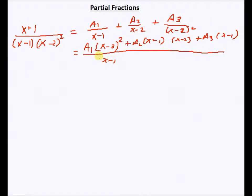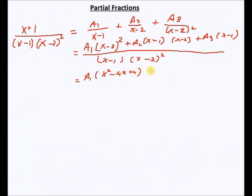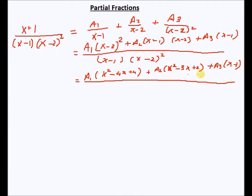The denominator is (x-1)(x-2)². Now I will expand each term. I get a1(x²-4x+4) + a2(x²-3x+2) + a3(x-1), all with the same denominator (x-1)(x-2)².